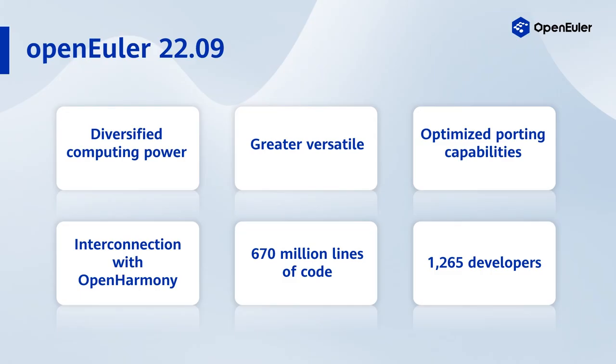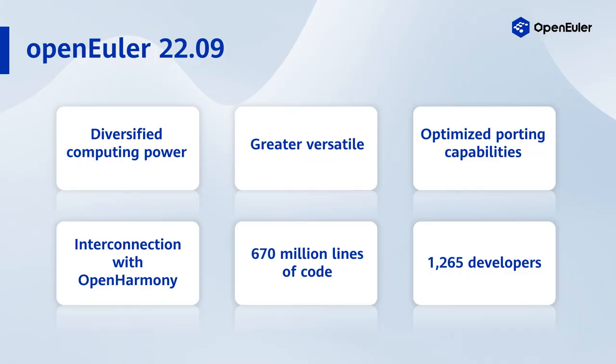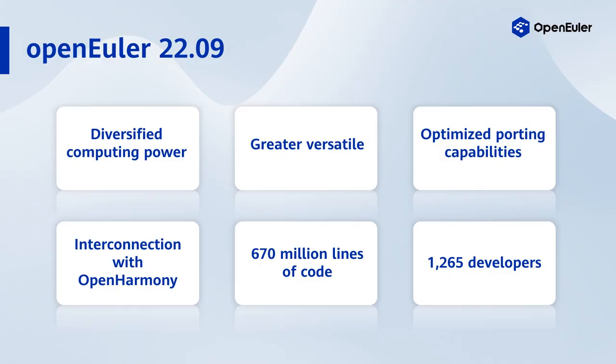Time for our last question: how many developers have contributed to OpenEuler 22.09? Type your answer in the chat window. We saw guesses of 1,000 and 2,000 — but the correct answer is 1,265 developers. Congratulations to those who got it right!